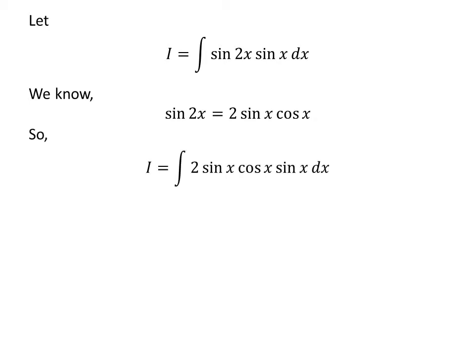I have replaced sine of 2 times x in the integral by its value given in the above trigonometry identity. So, I is equal to the integral of 2 times sine of x times cosine of x times sine of x with respect to x. Sine of x times sine of x is equal to square of sine of x. So I is equal to the integral of 2 times square of sine of x times cosine of x.